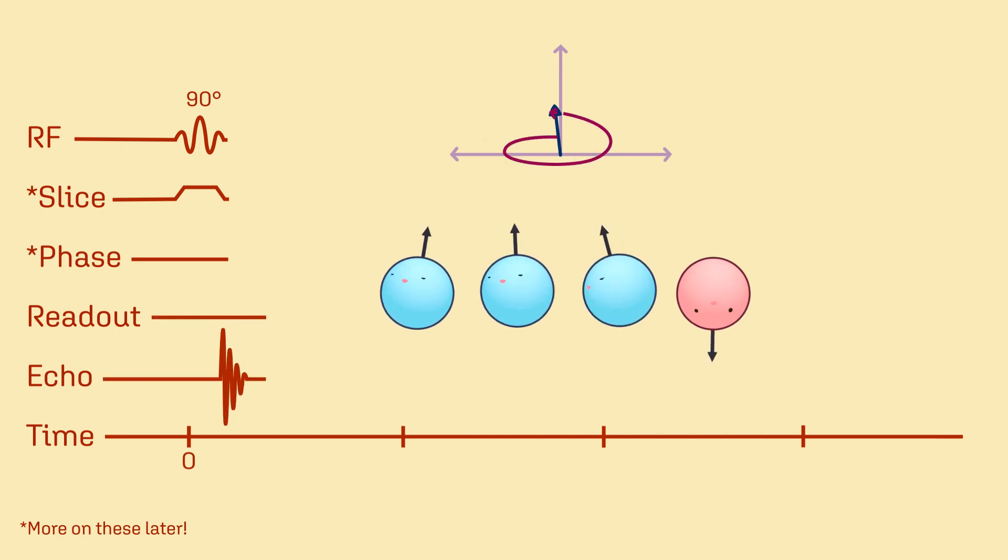Longitudinal recovery and transverse decay occur, producing a signal by free induction decay, which is susceptible to T2 star effects.